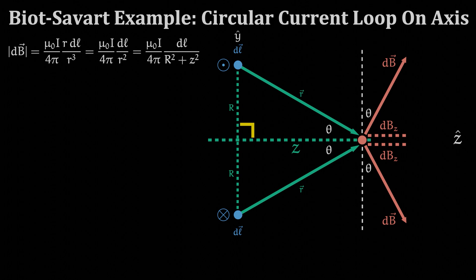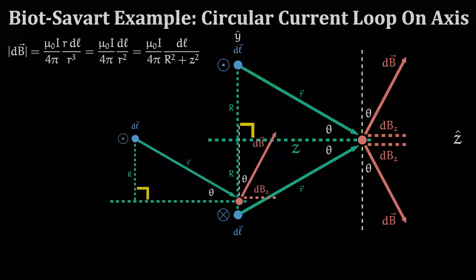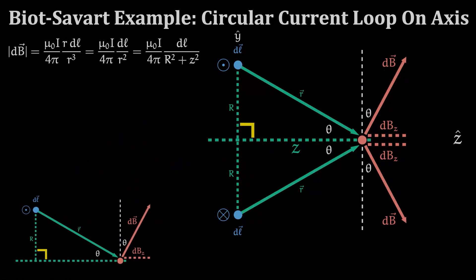For dB let's take a closer look at the geometry we have to work with. Here we can see that this angle is also the same theta that we've been working with all along. If we take the sine of angle theta, we get the z component of dB divided by the magnitude of the entire dB vector. We can rearrange these scalars to isolate the z component dBz.